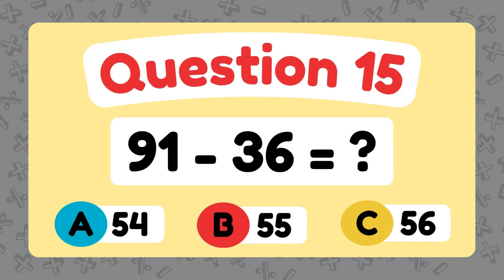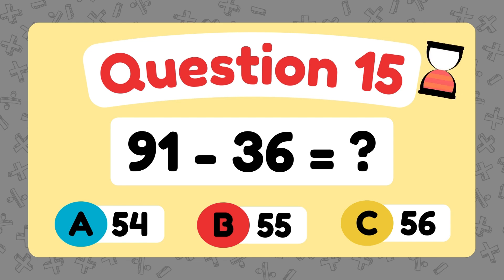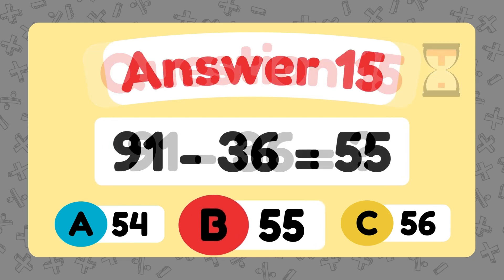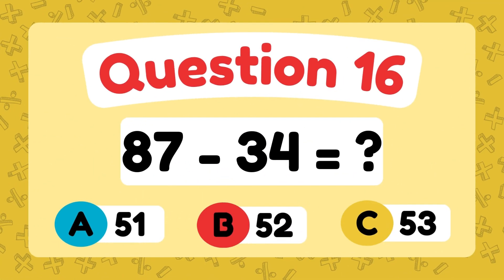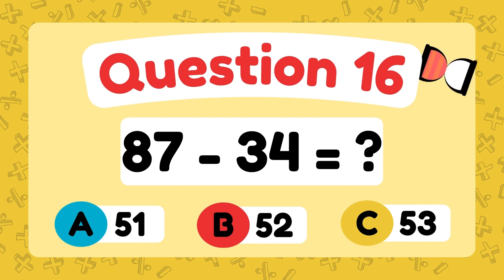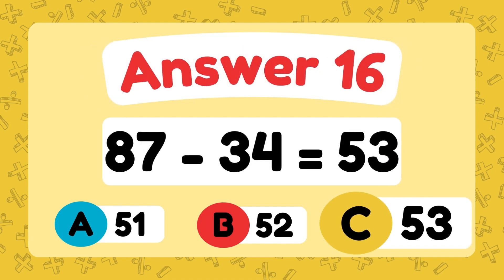What is 91 minus 25? The answer is 55. What is 87 minus 34? The answer is 53.